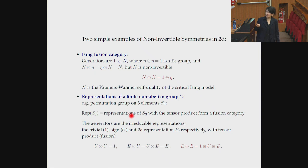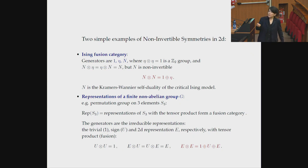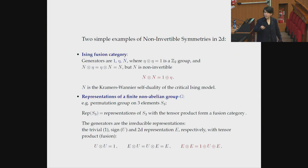The simplest finite non-abelian group is S3, and the representations of S3 form an example of a fusion category. The irreps — the simple lines — are the trivial representation, the sign representation, and a two-dimensional representation E. The sign representation squares to 1, but E squares to a tensor product decomposition into irreps, which is again a non-invertible fusion. These two examples — the Ising category and Rep(S3) — will be useful to keep in mind for the rest of the talk.